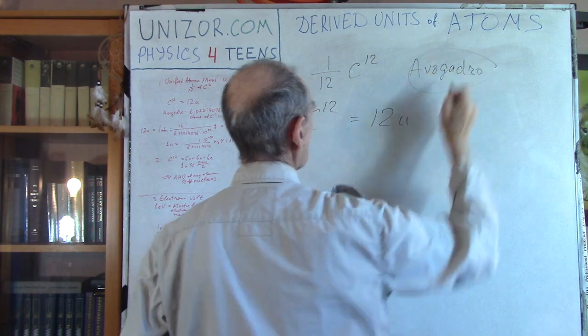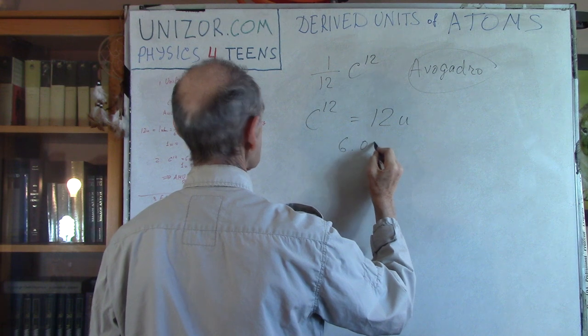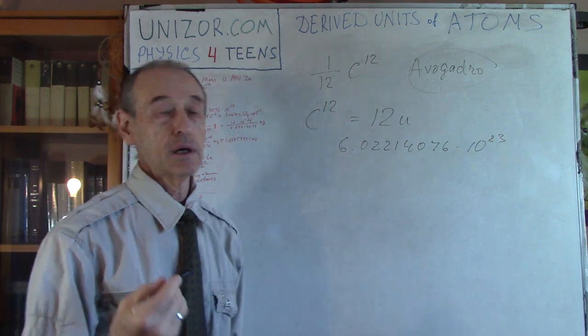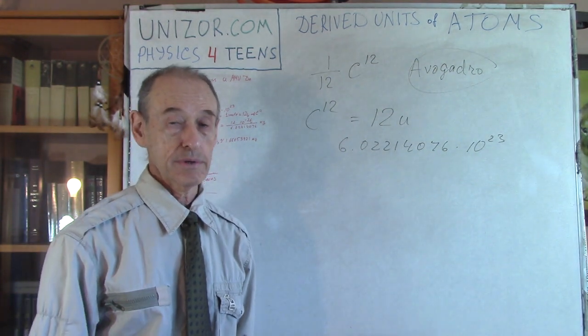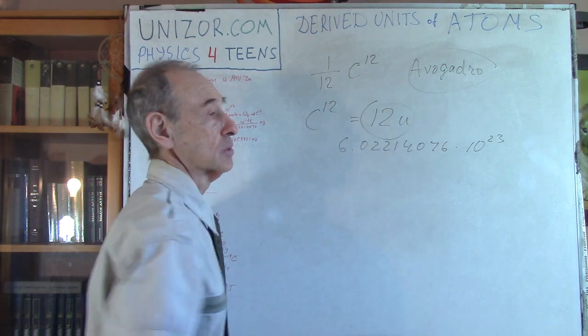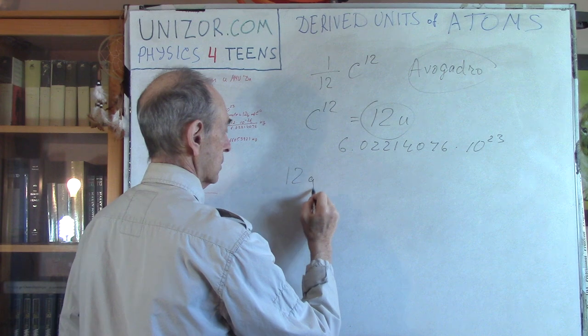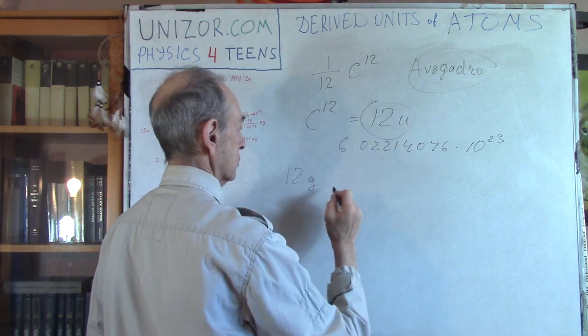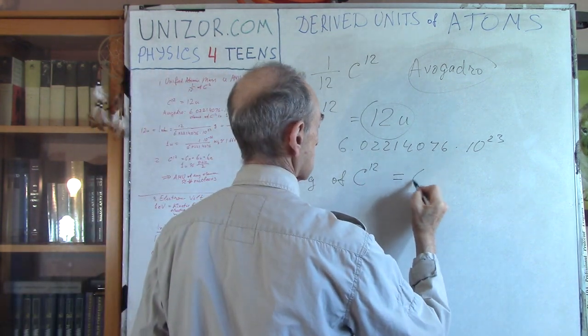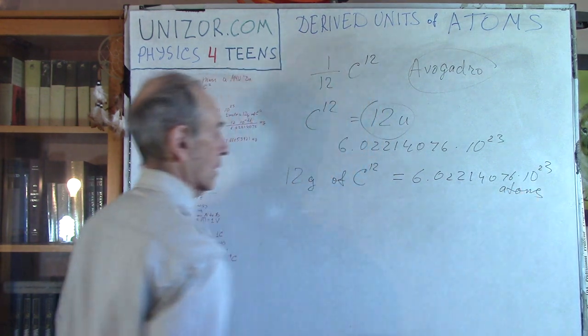Avogadro number, you remember, is defined, it's just a definition, exact definition, as 6.02214076 times 10 to the 23rd degree. This is number of atoms in a mole of the element. The mole is, by definition, is number of grams which corresponds to its atomic mass. So one mole, which means 12 grams, exactly 12 grams, because this is exactly 12 units, of carbon 12 is one mole. And this is 6.02214076 times 10 to the 23rd atoms.